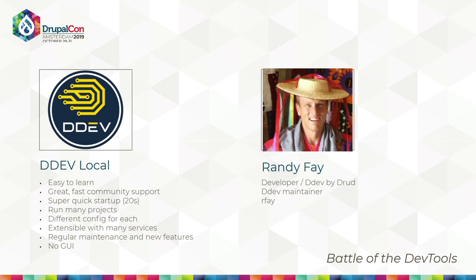So let me talk about DDEV just a little bit. DDEV is a Docker Compose wrapper written in Go language, and it works the same on Windows, Mac, or Linux — exactly the same. The amazing thing about Go is that you can compile into a fat binary that just has everything in it. We build all three binaries for Linux, Mac, and Windows all at the same time.